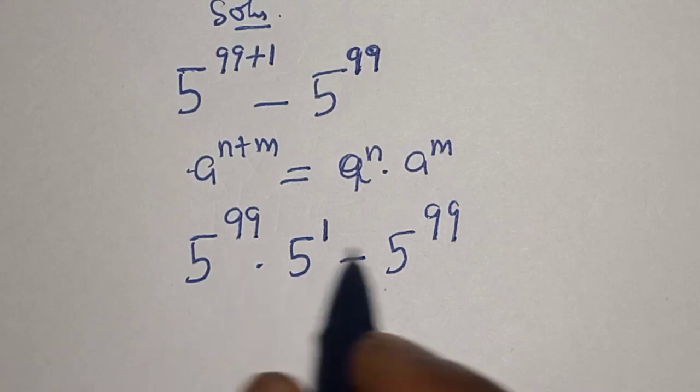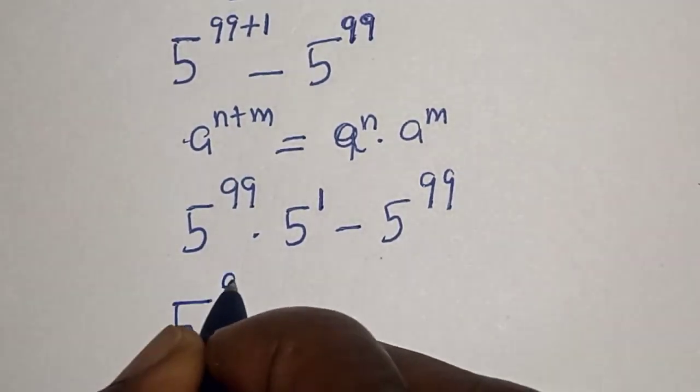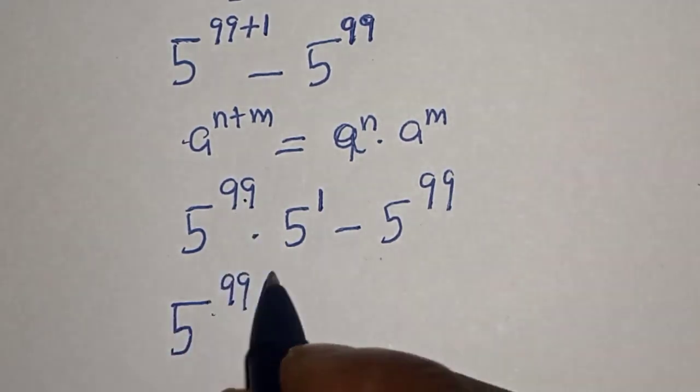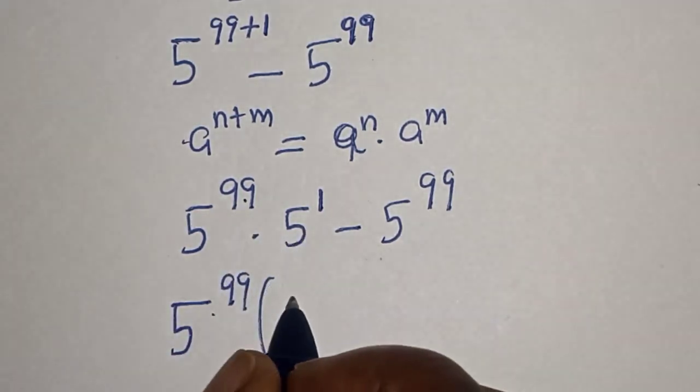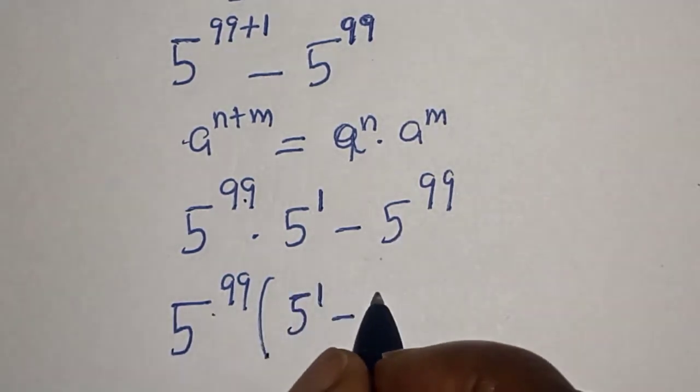Then 5 raised to power 99 is common. Let's bring it out. 5 raised to power 99 multiplied by this divided by this. We have 5 raised to power 1 minus this divided by this, 1.